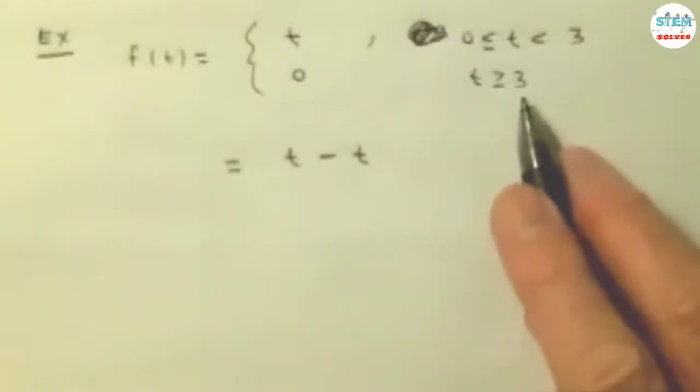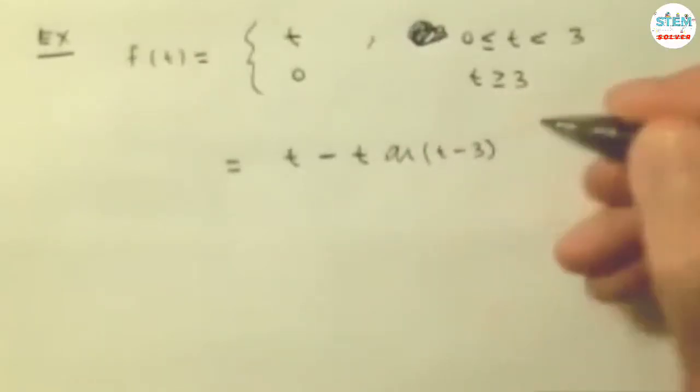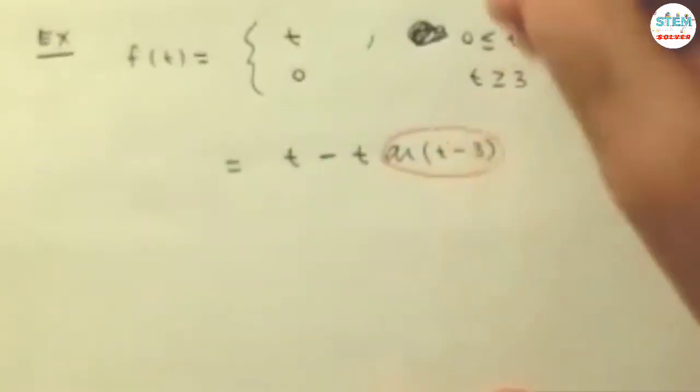But you want that to happen when t equals 3. And this is where the unit step function comes in. You're going to multiply this by this big fancy looking thing, which really isn't fancy at all. Remember, this here is either 0 or 1. That's it.